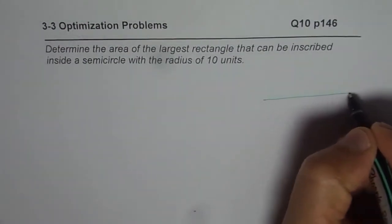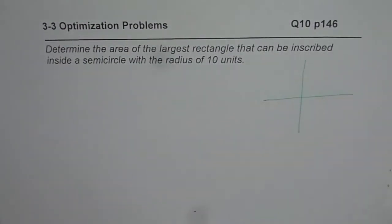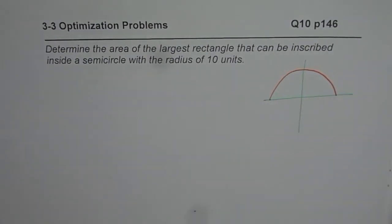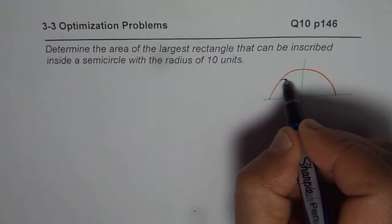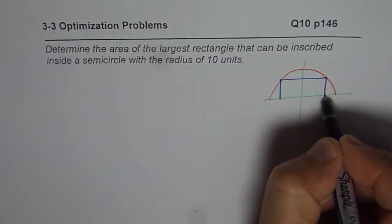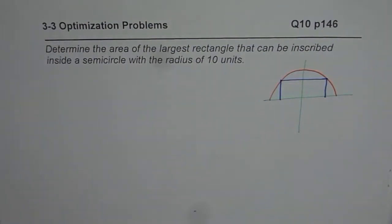So let us first sketch and then solve this particular question. It's a semicircle, so let's draw a semicircle here. And a rectangle inscribed, that means let's say that is a rectangle and its base will be along the x-axis. So that is what our rectangle is.